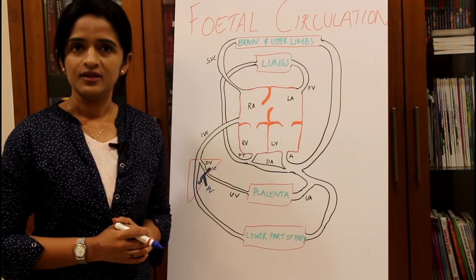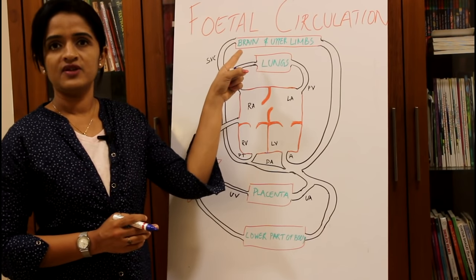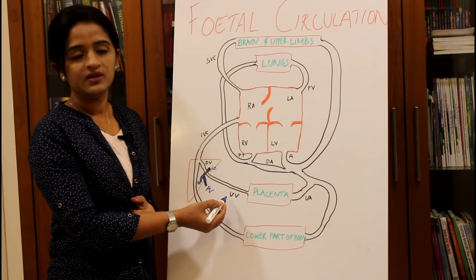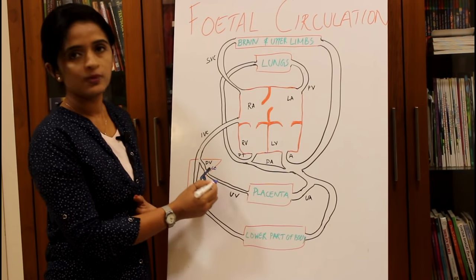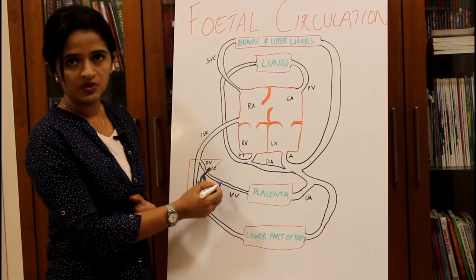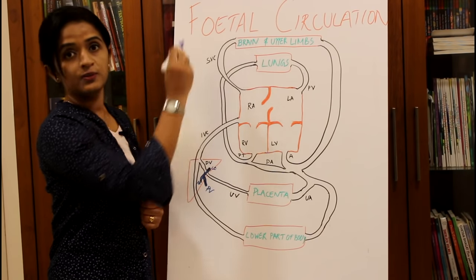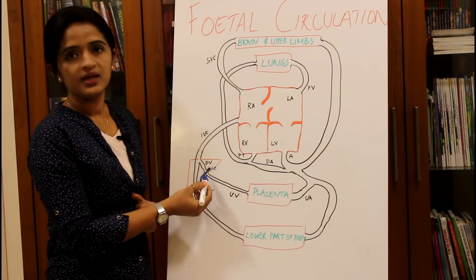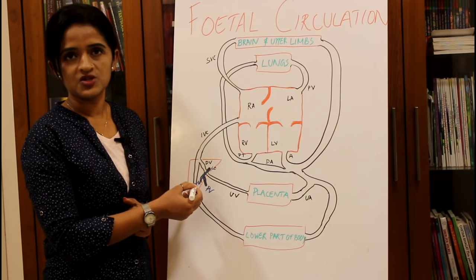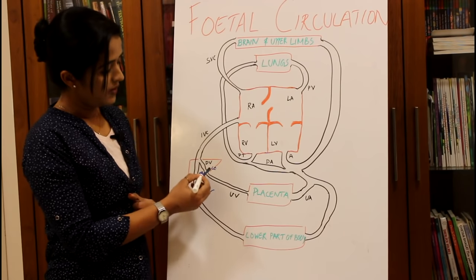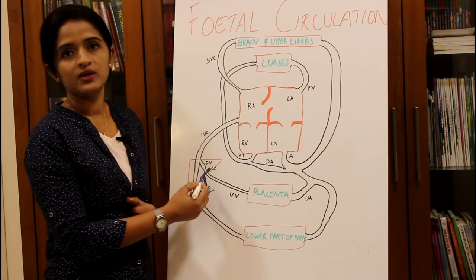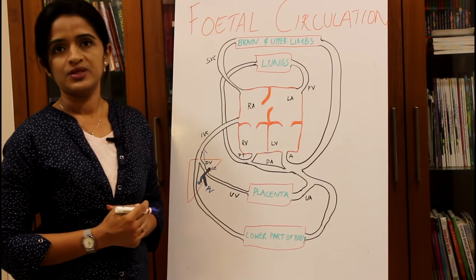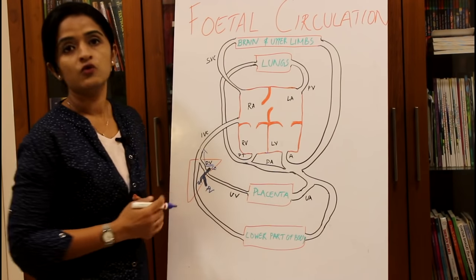The ultimate aim of fetal circulation is to provide the developing brain of the fetus with the maximum amount of purified blood. To carry the purified blood from the umbilical vein to the brain without it getting deoxygenated, the major quantity of blood through the umbilical vein should be shunted directly to the inferior vena cava by a bypass channel called the ductus venosus.